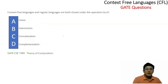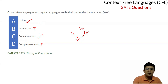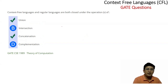Now this question says: context-free languages and regular languages are both closed under which operation? (A) Union — yes, both are closed under union. (B) Intersection — regular languages are closed under intersection, but not context-free languages. (C) Concatenation — yes, both are closed under concatenation. (D) Complementation — regular languages are closed under complementation but not context-free languages. So options A and C are the correct answers. This was the GATE 1989 question.